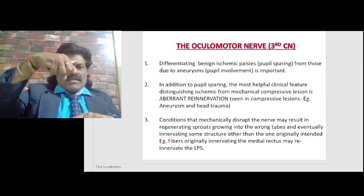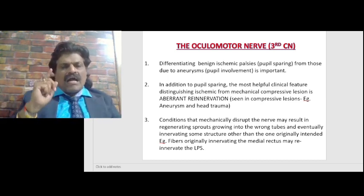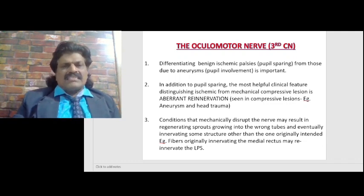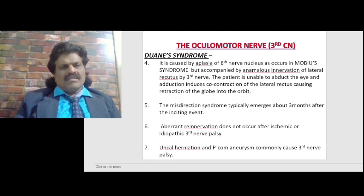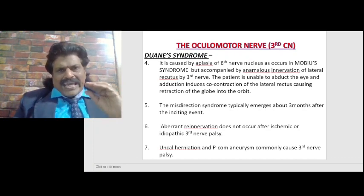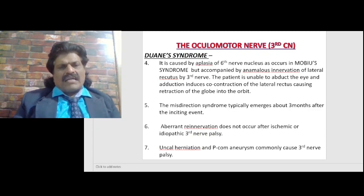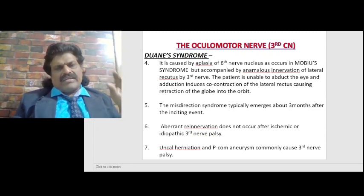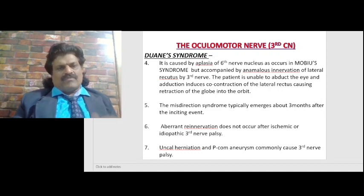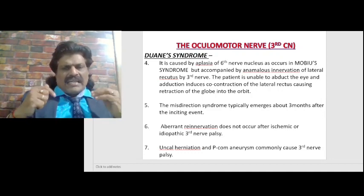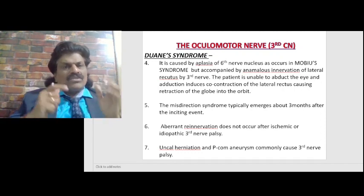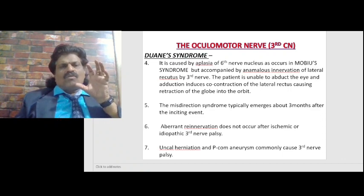Two important points: in compressive lesions, pupillary fibers are affected and aberrant re-innervation is seen — not in ischemic third nerve lesions. Regarding the two-hand syndrome: it is caused by aplasia of the sixth nerve nucleus as occurs in Mobius syndrome, accompanied by anomalous innervation of the lateral rectus by the third nerve. Generally the lateral rectus is innervated by the sixth nerve, but with aplasia of the sixth nerve nucleus, the lateral rectus gets innervated by the third nerve. The patient is unable to abduct the eye, and adduction induces co-contraction of the lateral rectus causing retraction of the globe into the orbit.